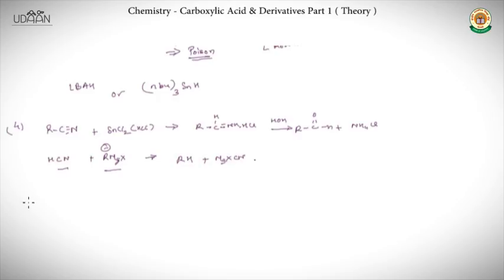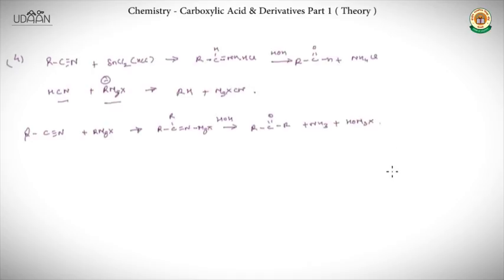Whereas when we add to an alkyl cyanide RMgX, it is R-C=N-MgX, which on hydrolysis gives ketone plus NH3 plus Mg(OH)X.